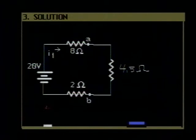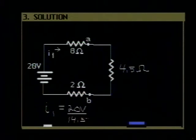So that the value for I1 can be found from Ohm's Law by taking the 20 volts EMF of the battery and dividing by the equivalent resistance, which is 14.5 ohms, and if you do that, you get a value of 1.38 amperes. So we have I1.